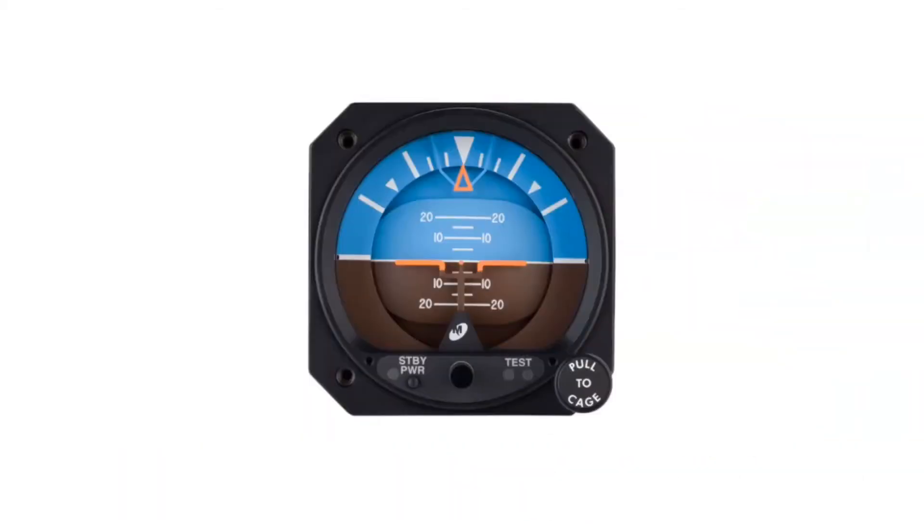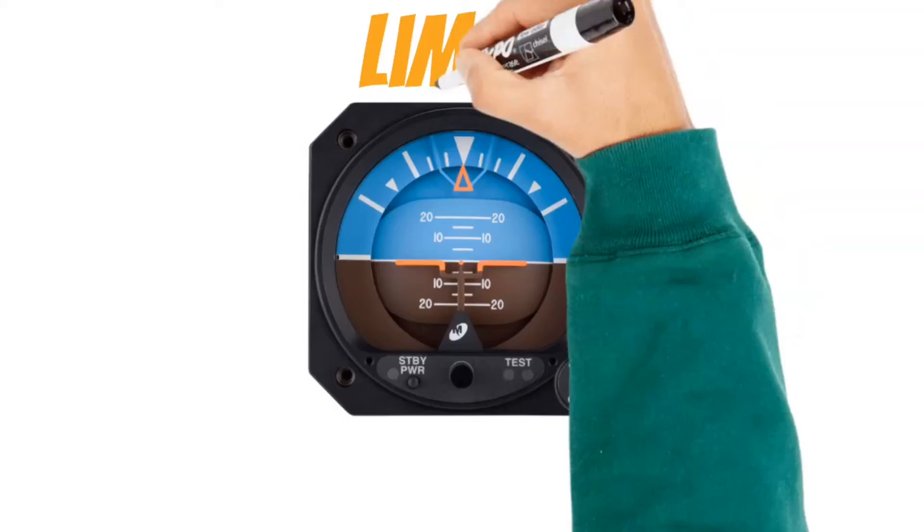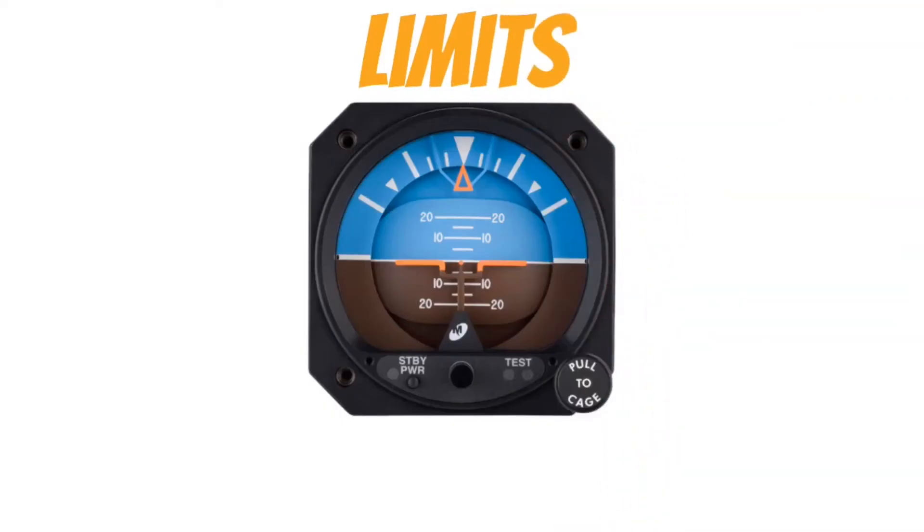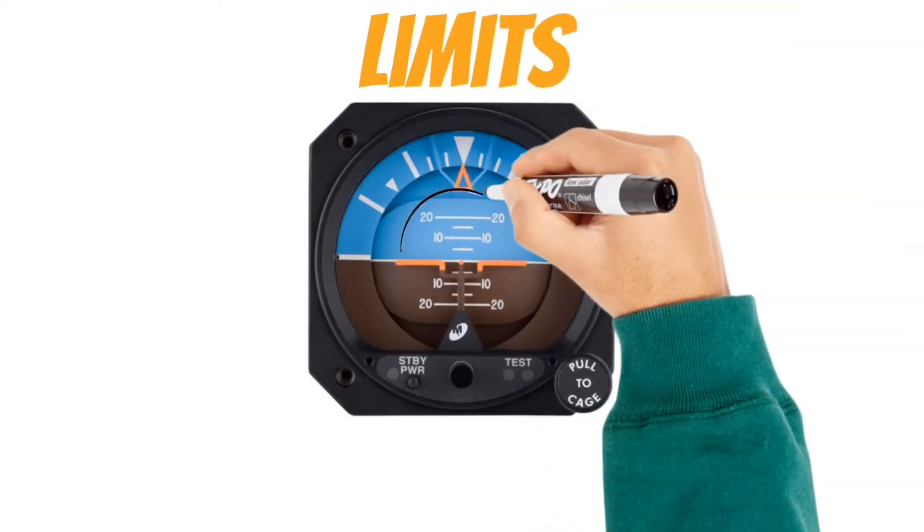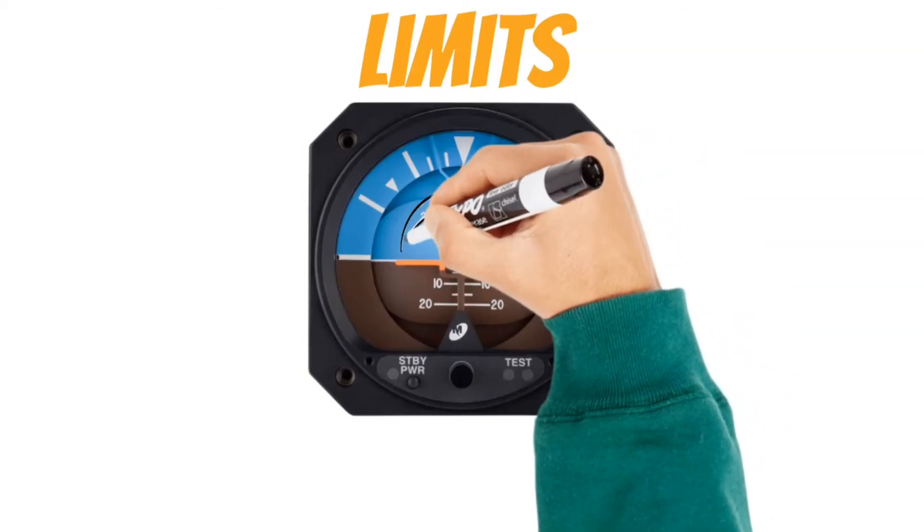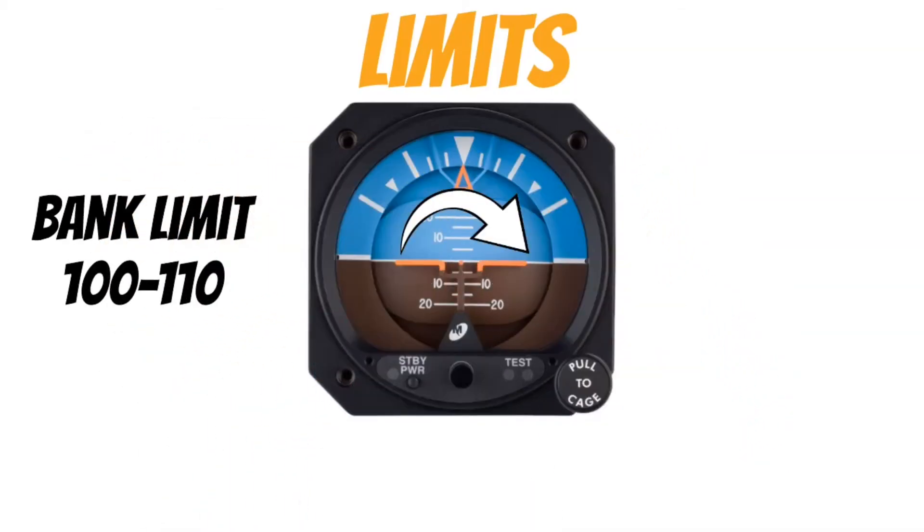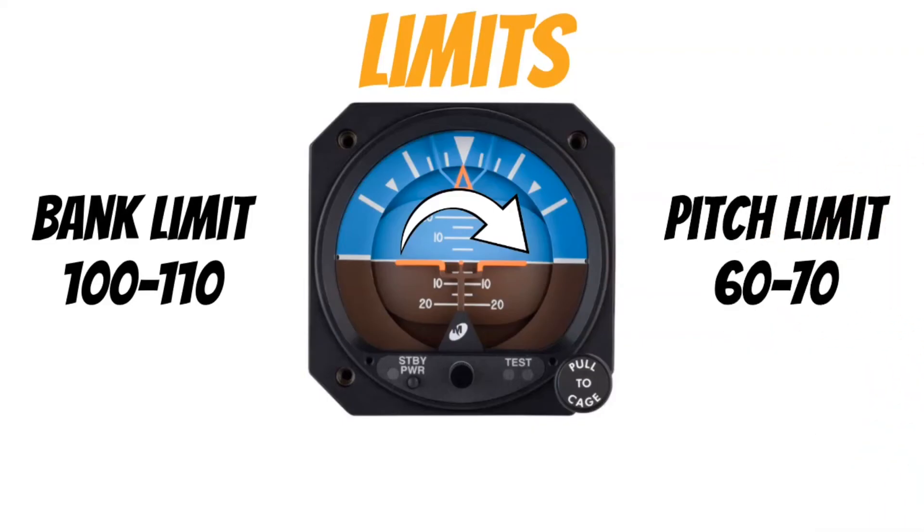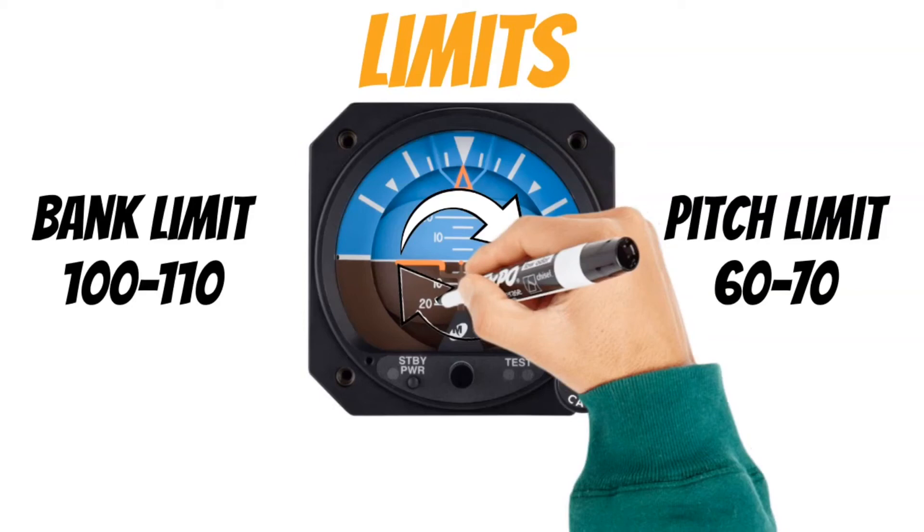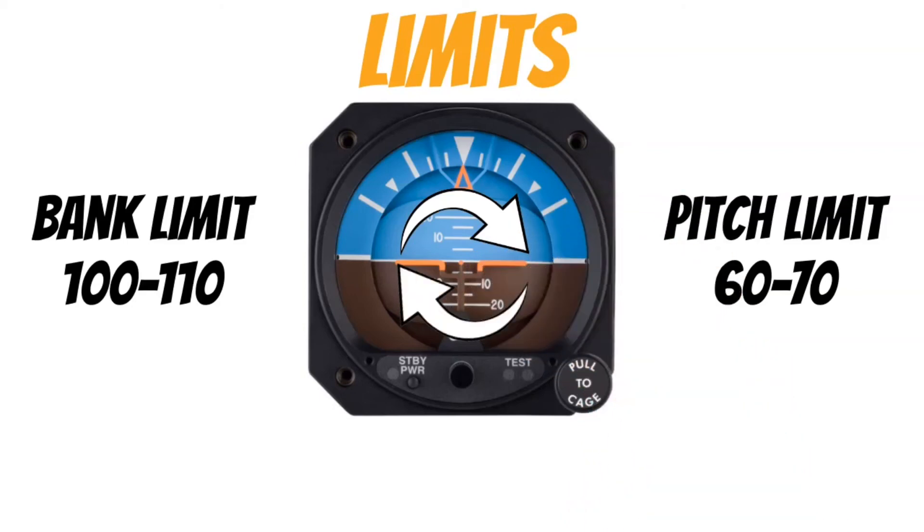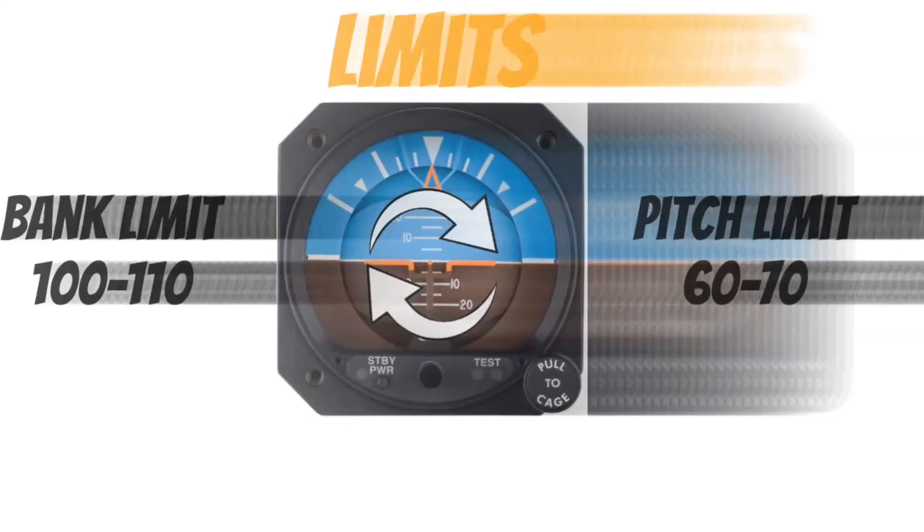Now, something I want to mention about these attitude indicators is that a lot of the older ones have pitch and bank limits before the gauge begins to tumble. On most of these gauges, the bank limit is somewhere from 100 to 110 degrees. And the pitch limit is between 60 and 70 degrees. When these limits are exceeded, basically what you'll see is the horizon line spinning around violently inside of the attitude indicator. And I hope you're in visual conditions if this happens to you. Okay, enough of that.